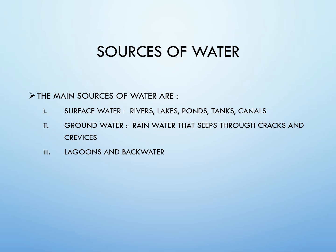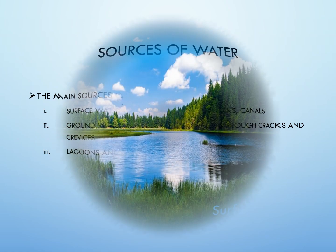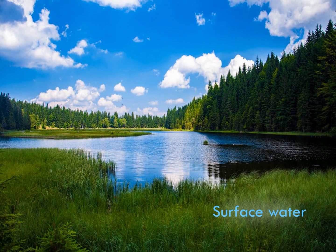Surface water is that part of water which is available on the surface of the earth in the form of rivers, lakes, ponds, tanks, canals, etc. A good part of it is lost through evaporation and plant transpiration, and a large part percolates into the ground and is available as groundwater.